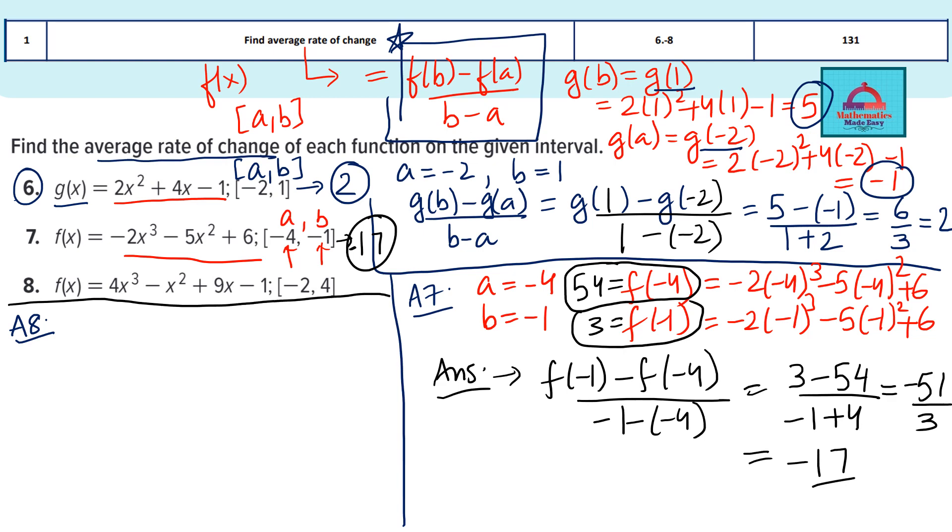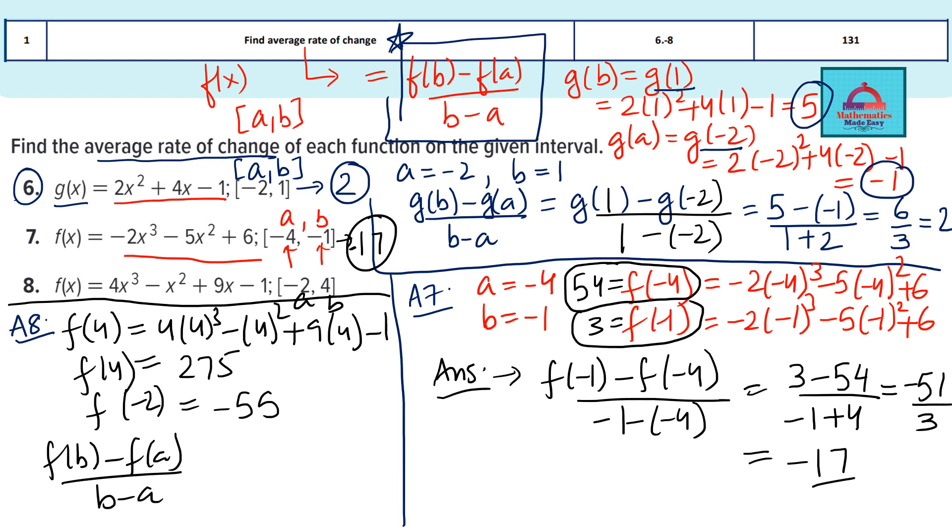Let's do the last one, 8. I am going to be now quick on this because we are following the same method. You must be now more comfortable. So this is a, this is b. f(4), that is f(b), is going to be 4 multiplied with 4³ minus 4² plus 9 times 4 minus 1. So this comes out to be on simplification, a big number 275. So you have got your f(4). Similarly do f(-2). This will come out to be -55. Plug in the formula. And your f(b) minus f(a) over b minus a will come out. So this will be 275 minus of -55 divided by b minus a, so 4 minus of -2. Simplify. This comes out to be 330 over 6. So the final answer for this question is going to be 55.